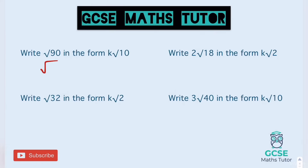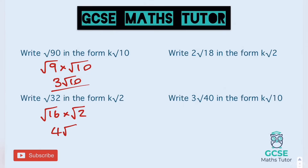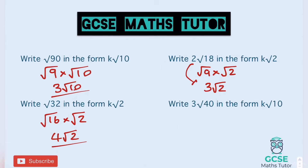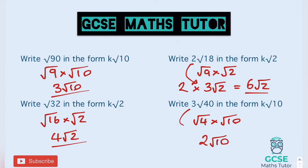The square root of 90 is the square root of 9 multiplied by the square root of 10, which is 3 root 10. The square root of 32 is the square root of 16 multiplied by the square root of 2, which is 4 root 2. For 2 root 18, ignoring the 2 for the moment: root 18 is the square root of 9 times the square root of 2, which is 3 root 2. Then dropping the 2 back down, 2 lots of 3 root 2 is 6 root 2. For 3 root 40, ignoring the 3: root 40 is the square root of 4 times the square root of 10, which is 2 root 10. Reintroducing the 3, 3 lots of 2 root 10 is 6 root 10.